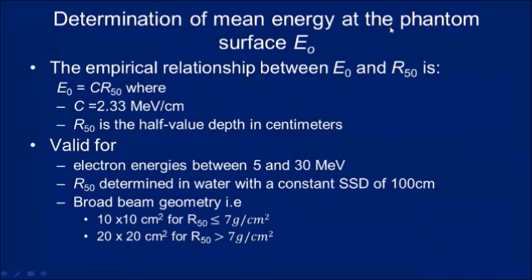Determination of the mean energy at the phantom surface E0 is straightforward: E0 = C × R50, where C = 2.33 MeV/cm, an empirical constant. For example, if R50 = 4 cm, then E0 = 4 × 2.33 = 9.32 MeV. This equation is valid for electron beams of 5 to 30 MeV, and requires R50 measured at 100 cm SSD with the appropriate field size.